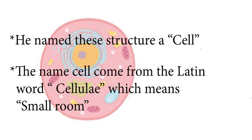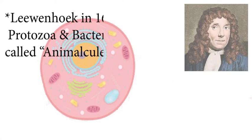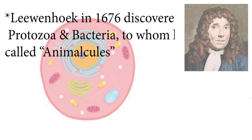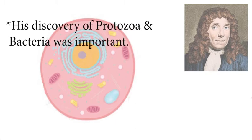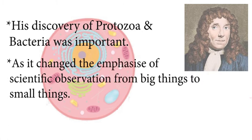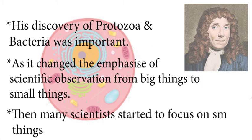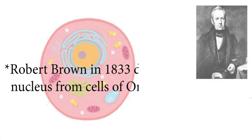After the discovery of cell, Leeuwenhoek in 1676 discovered protozoa and bacteria, which he called 'animalcules.' His discovery of protozoa and bacteria was important as it changed the emphasis of scientific observation from big things to small things. Then many scientists started their focus on small things. Later, in 1833, Robert Brown discovered the nucleus in the cells of orchid plants.